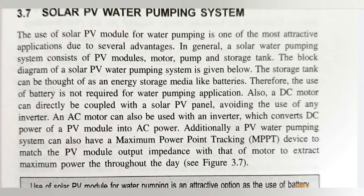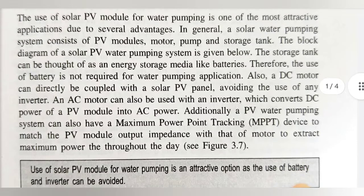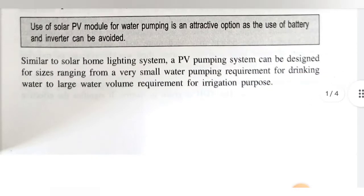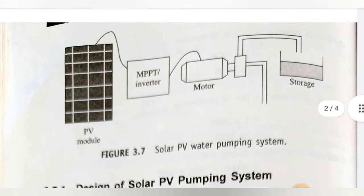In general, a solar water pumping system consists of PV modules, motor pump, and storage tanks. Those are the components of the solar water pumping system. The block diagram of the solar PV water pumping system is given below. Here is a block diagram of the solar water pumping system.